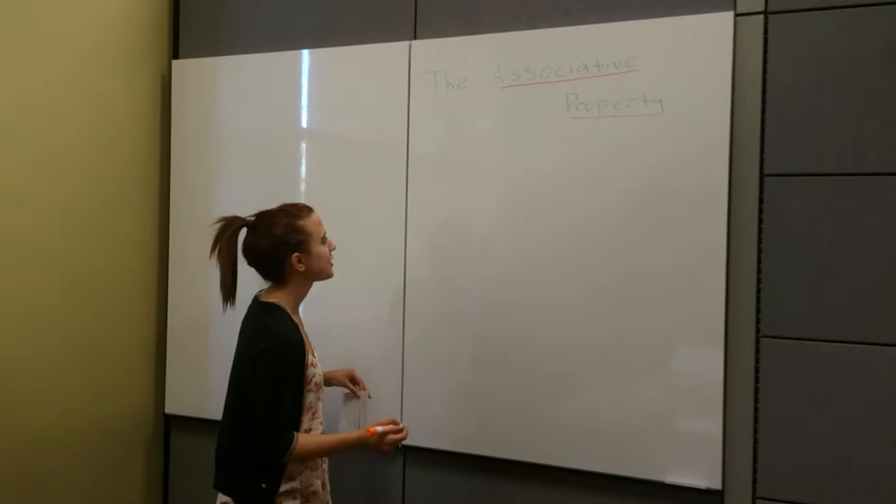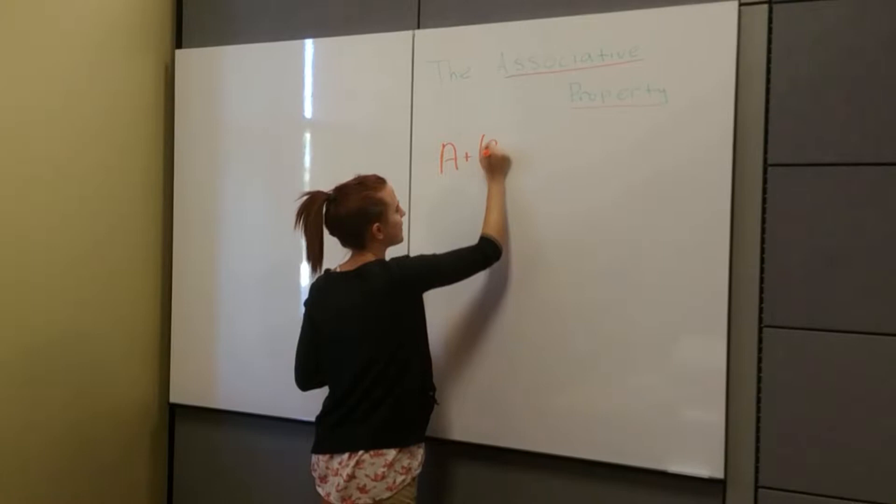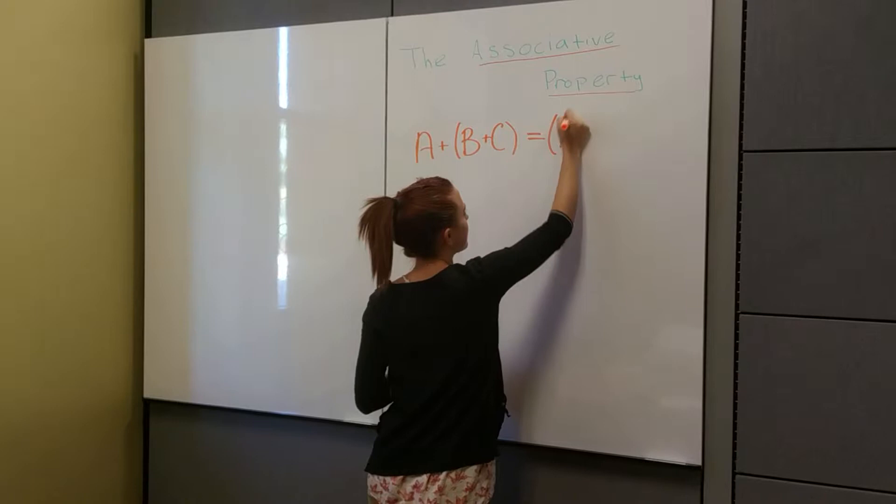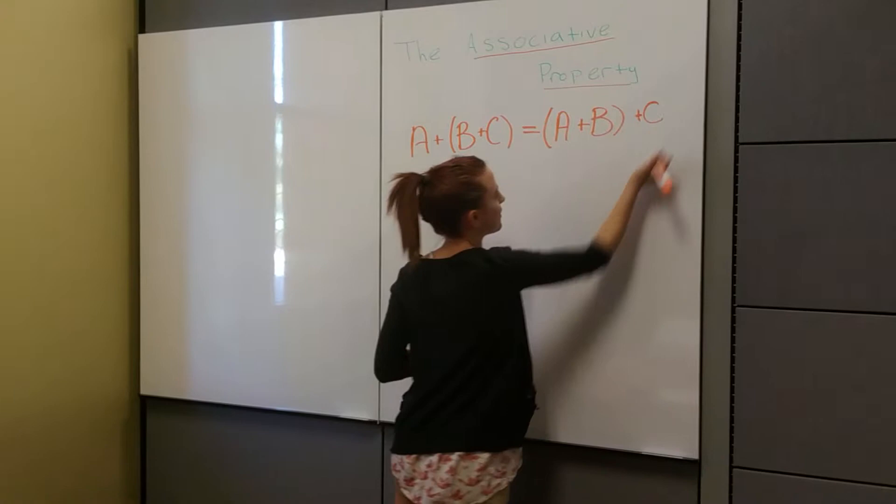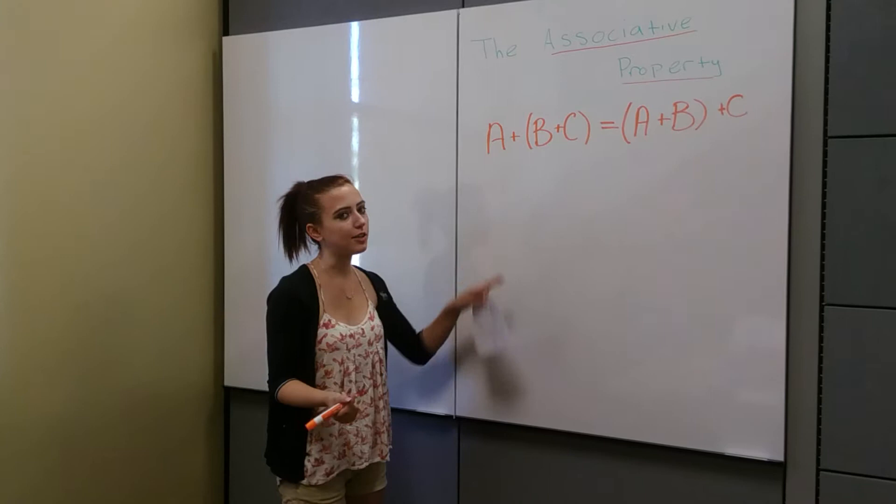So the associative property can be written as A plus parentheses B plus C is equal to parentheses A plus B, close parentheses, plus C. So basically what it's stating is that with addition and multiplication, no matter what your order of operations are and where the parentheses are, you'll still get the same answer.